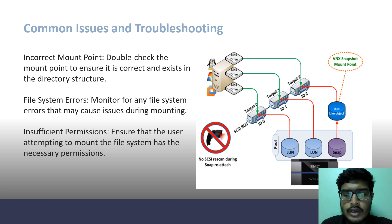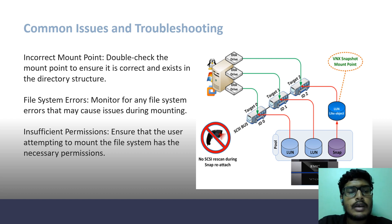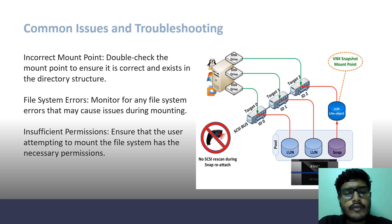This is the figure of common issues and troubleshooting for file system mounting. Incorrect mount point: Double-check the mount point to ensure it is correct and exists in the directory structure. File system errors: Monitor for any file system errors that may cause issues during mounting. Insufficient permissions: Ensure that the user attempting to mount the file system has the necessary permissions.